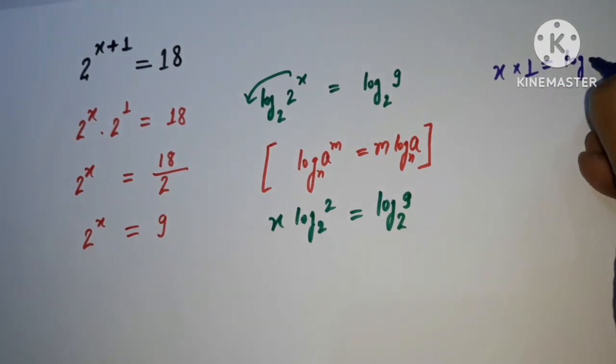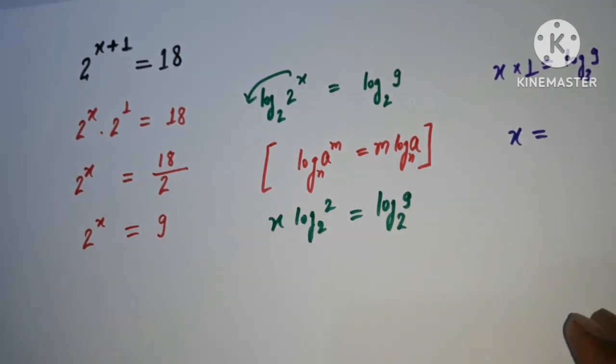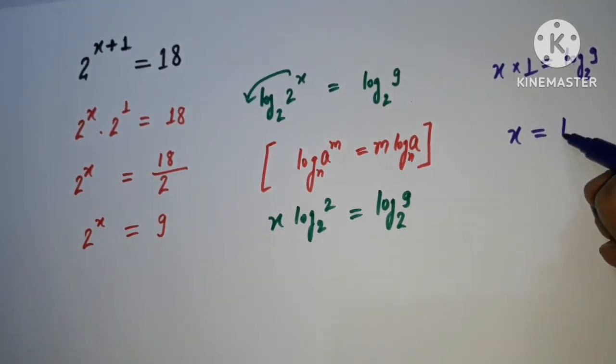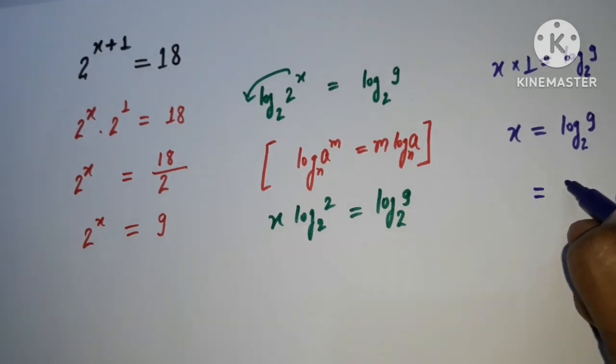So x times 1 and here log base 2 of 9. So obviously x is equal to log base 2 of 9, and this is the result after solving.